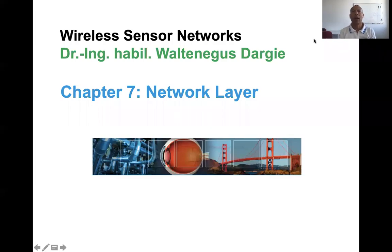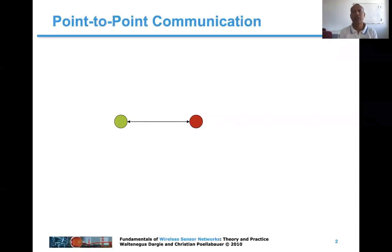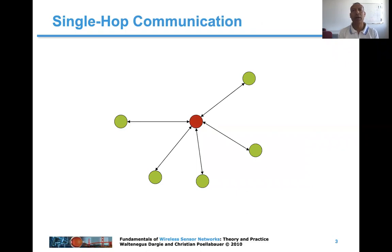Hello, welcome to this session. Today we are going to begin a new chapter on the network layer for wireless sensor networks, or routing layer protocols for wireless sensor networks. In the previous videos, we discussed point-to-point communication, which was the responsibility of the different physical layer protocols. Then we considered the case where in a single hub environment, multiple nodes share the medium. The arbitration of the medium is the responsibility of the protocols at the medium access control layer.